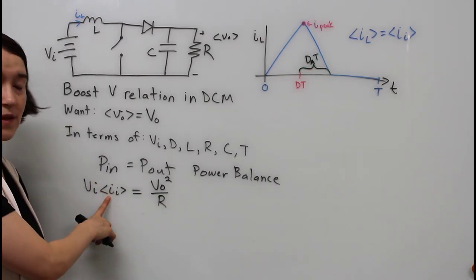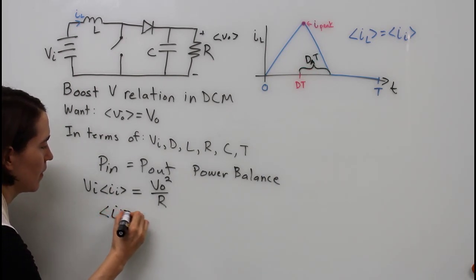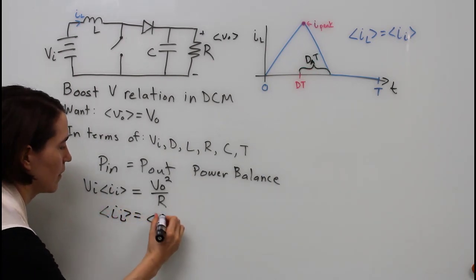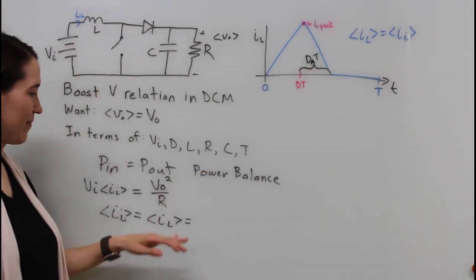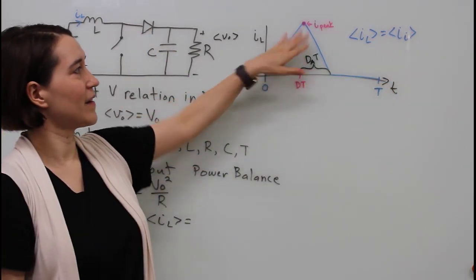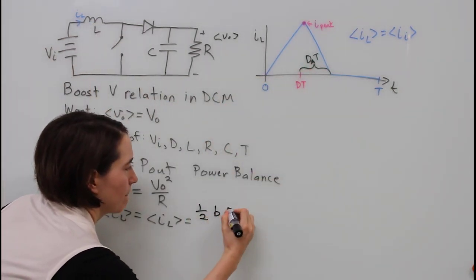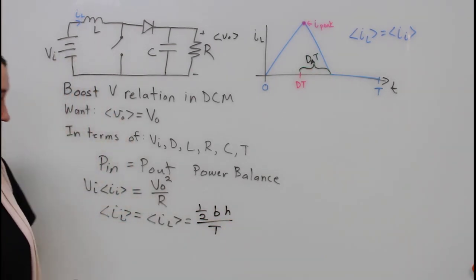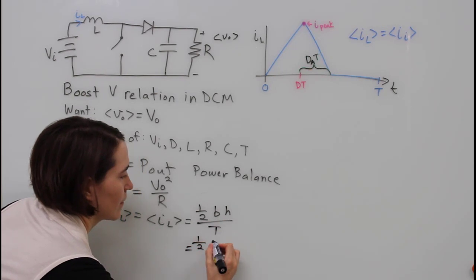The input current is not one of our defined terms, so we need to replace that and put it in terms of things that we know. We recognize that the input current is equivalent to the inductor current, the average values of both of those. We can find the average value by looking at the triangle: one half base times height divided by the time, that's the amount of charge going through it.